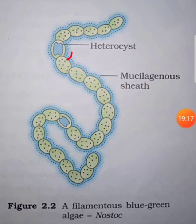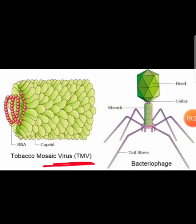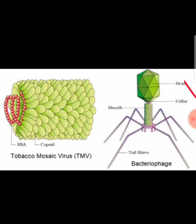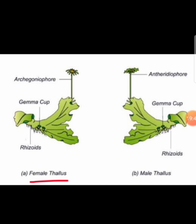Here is a representation of Nostoc, a blue-green alga. What you need to remember is the heterocyst, which helps in nitrogen fixation. Here you can find two representations: tobacco mosaic virus, where RNA is the genetic material and it has a protein capsule called the capsid; and bacteriophage, where DNA is the genetic material — it has a head region, protein capsid, collar, and tail.